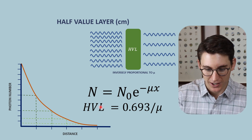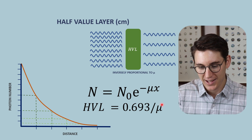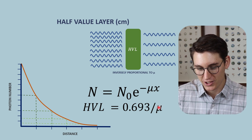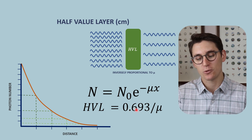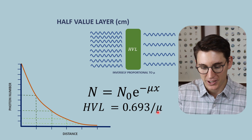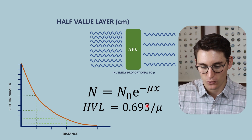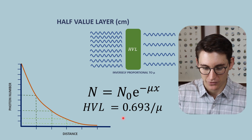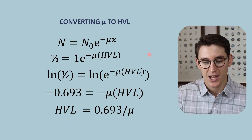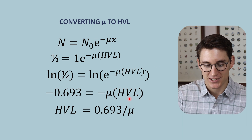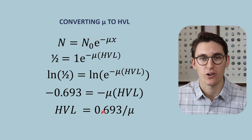The relationship between our half value layer and our linear attenuation coefficient is inversely proportional — we've seen that. As our linear attenuation coefficient increases, our half value layer decreases. You might be wondering how we arrive at this 0.693 divided by our linear attenuation coefficient. We can actually calculate this using the equation we've established. Don't run away when you see the math — you don't need to reproduce this, but I want you to understand how our linear attenuation coefficient is related to our half value layer.